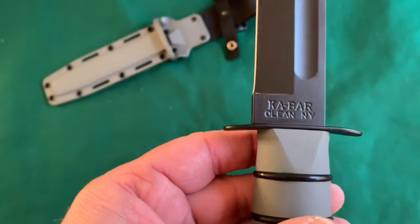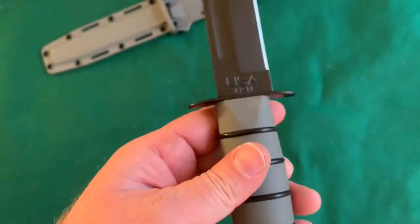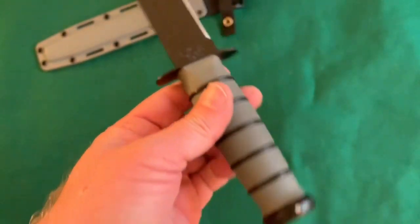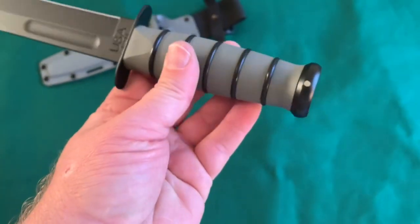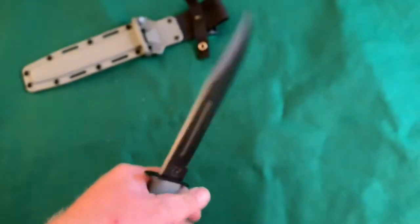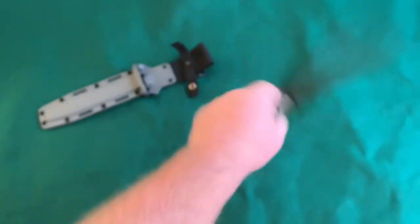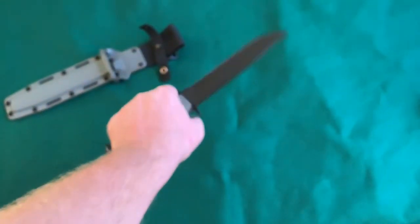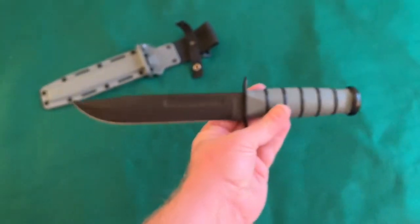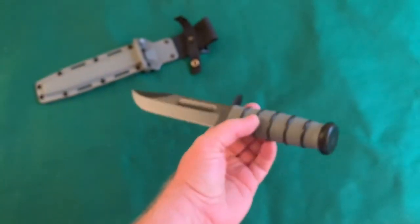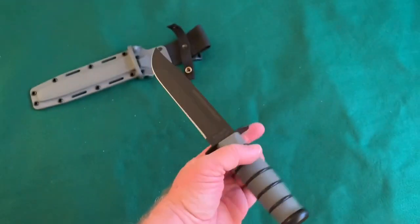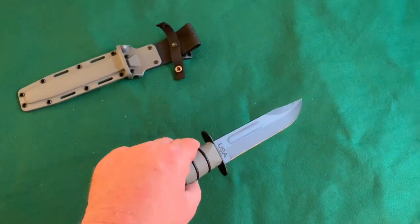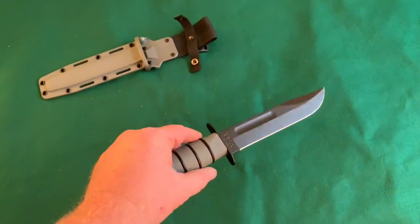Well there it is, razor sharp, you could shave with this. K-bar, Olean New York USA 1211. Super ridiculously nice, very quick in the hand. Yep, you can't go wrong with this one. Now these are designed more for combat and small chores.